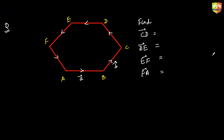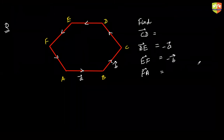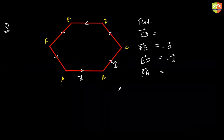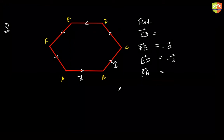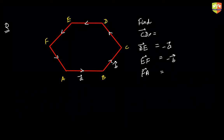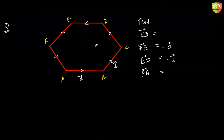DE is minus A and EF is minus B — those follow directly from the hexagon's symmetry. For CD, notice that the diagonal AD of a regular hexagon is in the same direction as B and double its length, so AD equals 2B. This can be verified geometrically: with each side length x, the diagonal components add up to 2x.